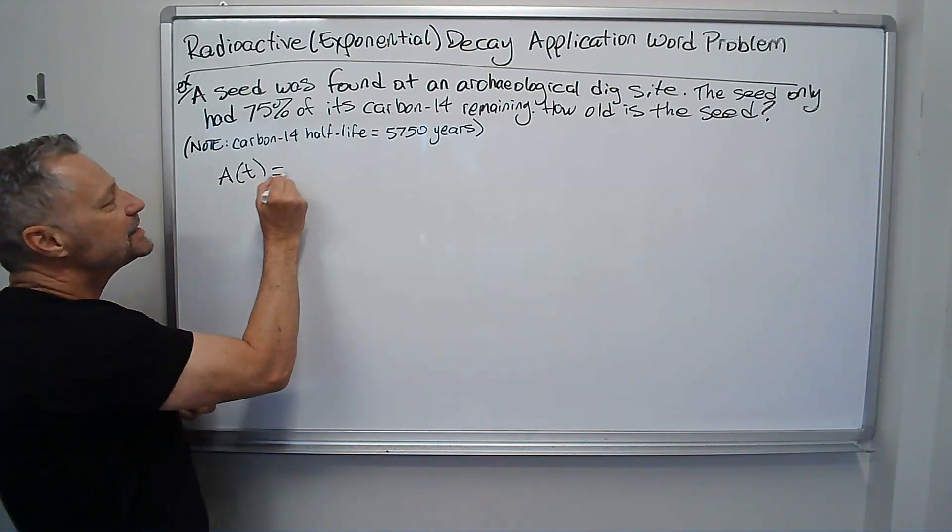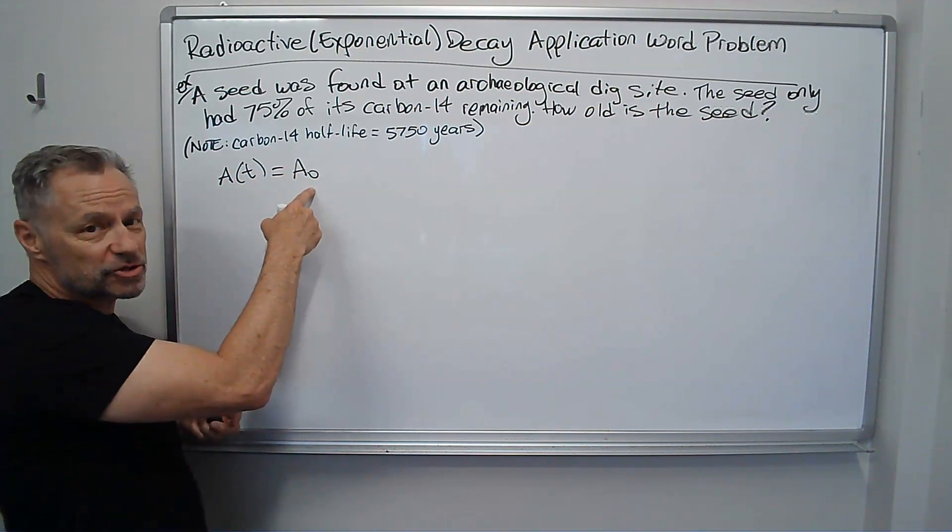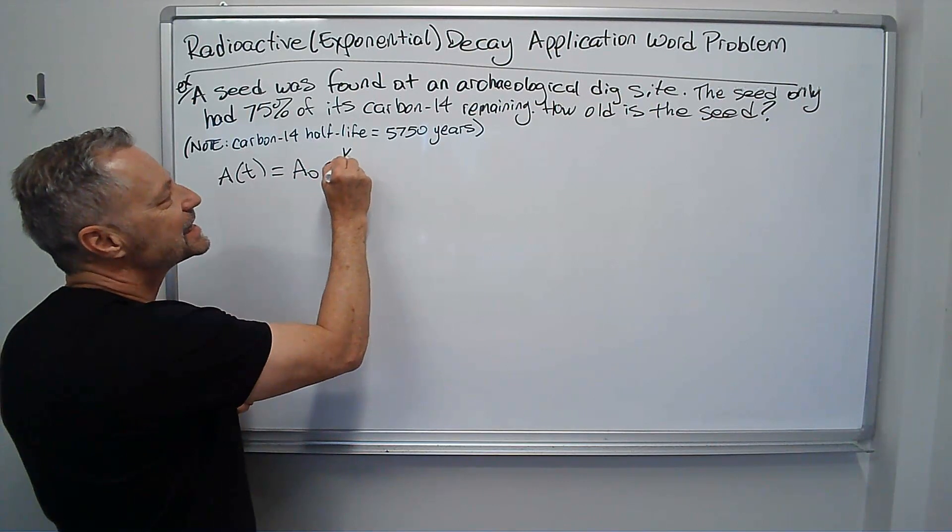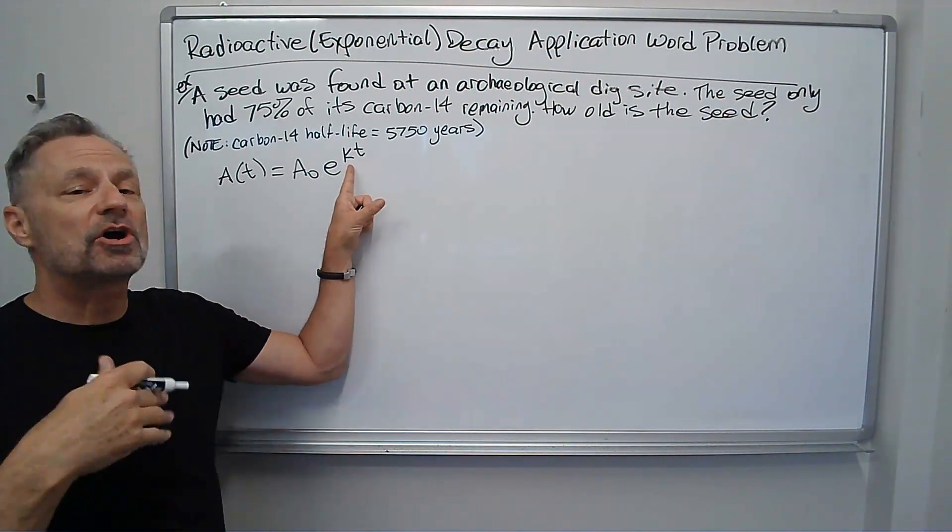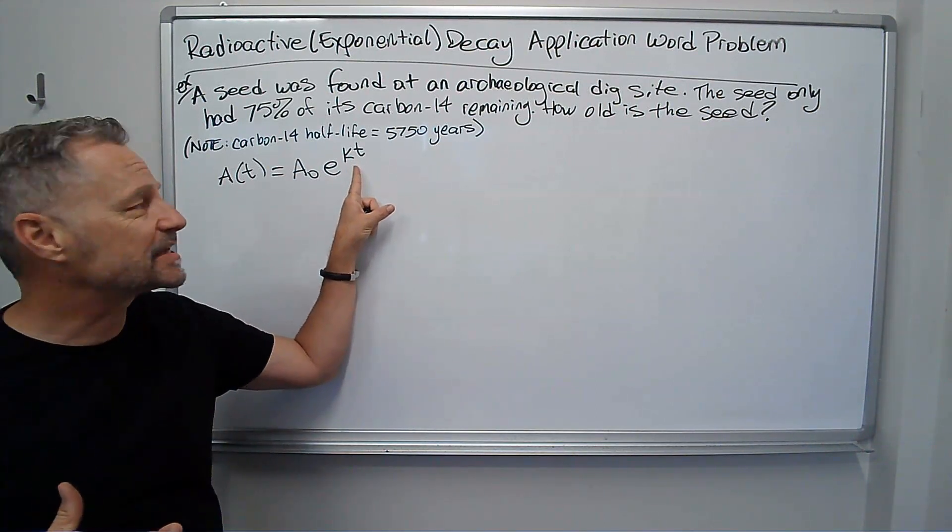the amount at time t, is A sub zero, the amount you start with, times e to the kt. They may use r times t. k is the constant of growth, the k in this case, and t is time.